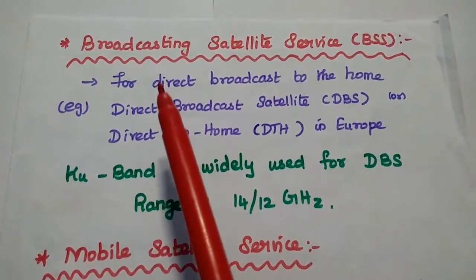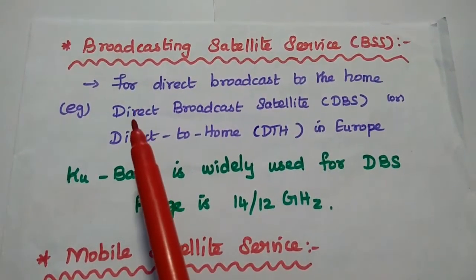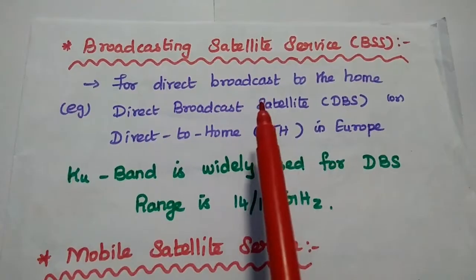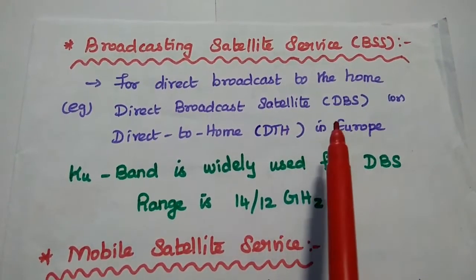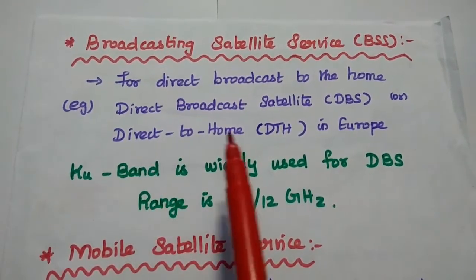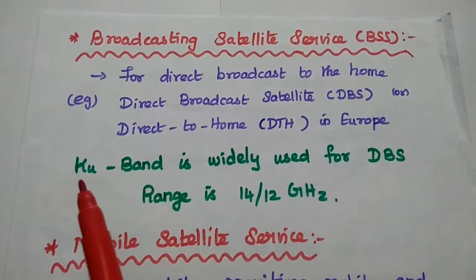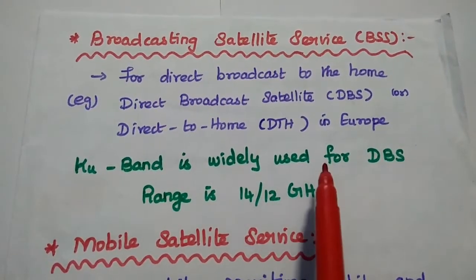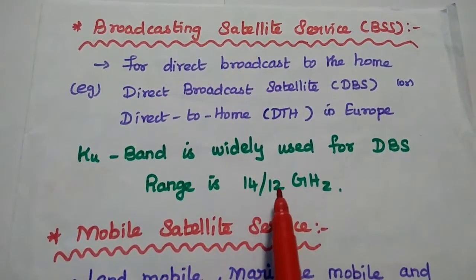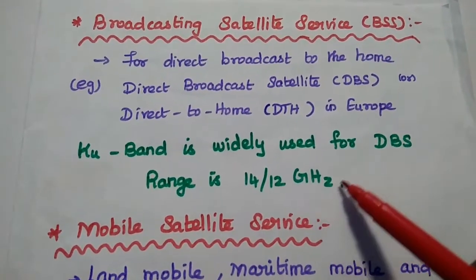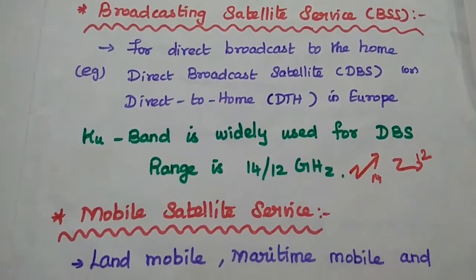The next one is Broadcasting Satellite Service, simply BSS. It is mainly used for direct broadcast to the home — for example, Direct Broadcast Satellite (DBS) or Direct-to-Home (DTH) in European countries. KU band is widely used for this DBS service, with a range of 14 to 12 gigahertz, meaning uplink frequency is 14 gigahertz and downlink frequency is 12 gigahertz.